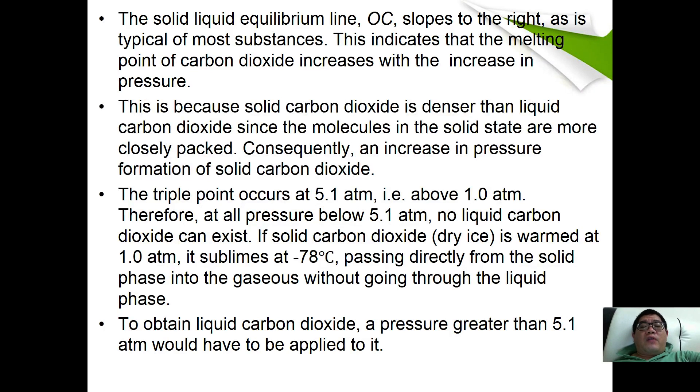The triple point occurs at 5.1 atmospheres. Therefore, for all pressures below 5.1 atmospheres, no liquid carbon dioxide can exist. If solid carbon dioxide is warmed at 1 atmosphere, it sublimes at negative 78 degrees Celsius, passing directly from the solid phase into the gaseous phase without going through the liquid phase. To obtain liquid carbon dioxide, a pressure greater than 5.1 atmospheres would have to be applied.